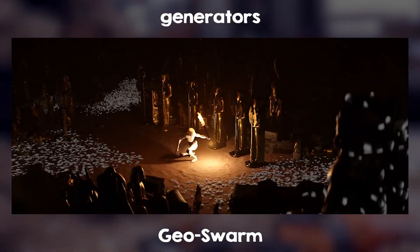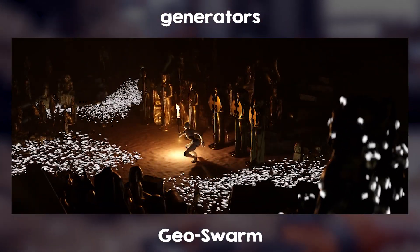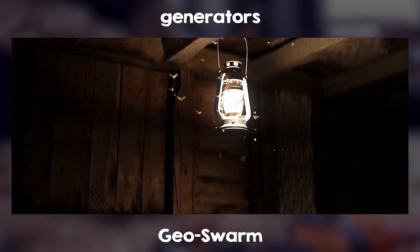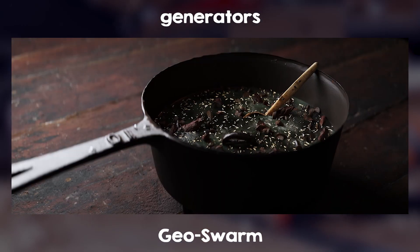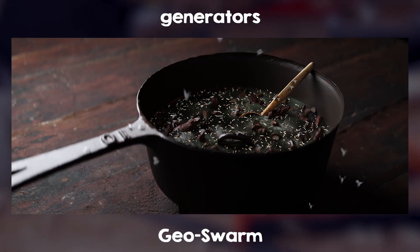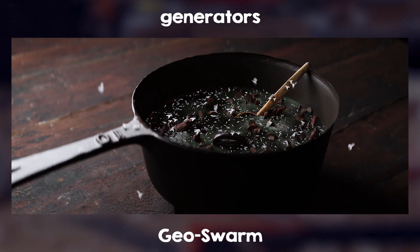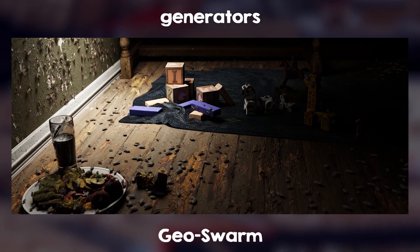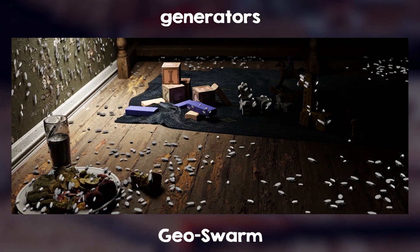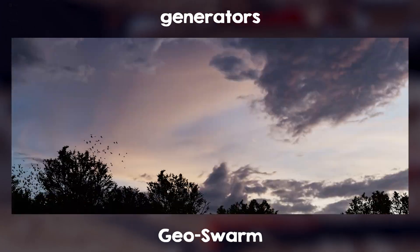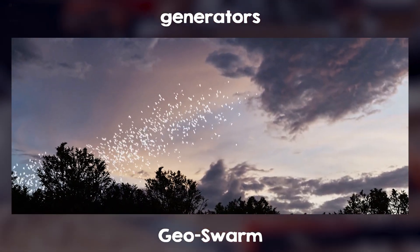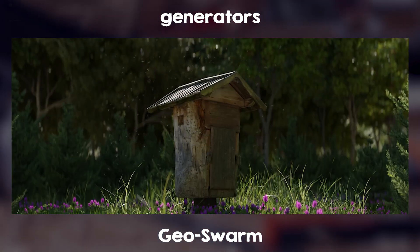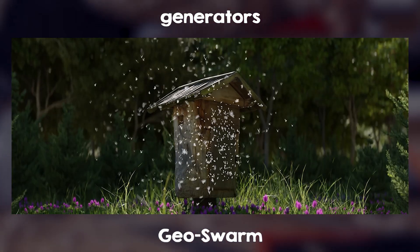Generators are great at one specific thing. This next add-on, Geo Swarm, can do what Population does but for insects, bugs, birds, and other creatures. It simulates swarms of animals and insects, and is a library of different animals that have full animations.